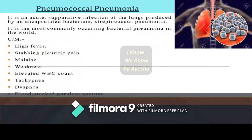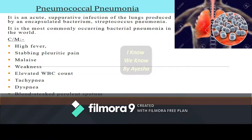Pneumococcal pneumonia is infection of the lung produced by the encapsulated bacterium Streptococcus pneumoniae, the most commonly identified cause of pneumonia worldwide. Clinical manifestations of this type include high grade fever, stabbing pleuritic chest pain, malaise, weakness, elevated WBC count, tachycardia, dyspnea, and blood-streaked purulent sputum.